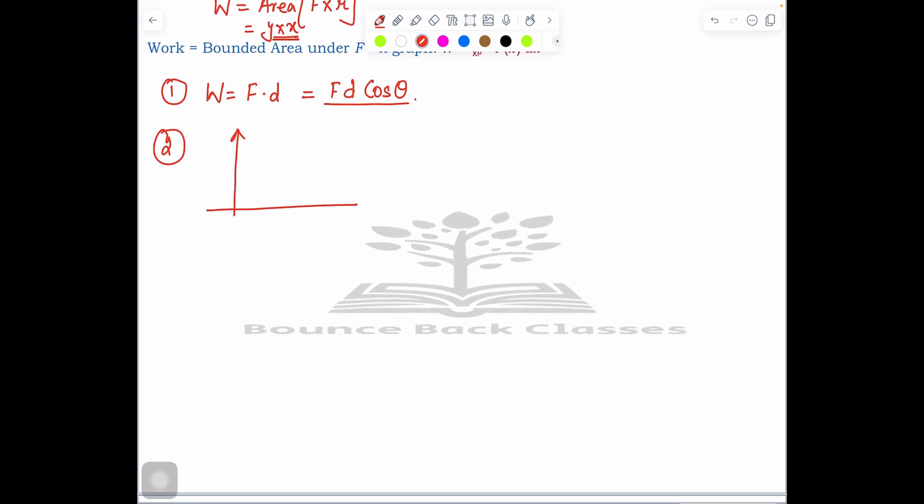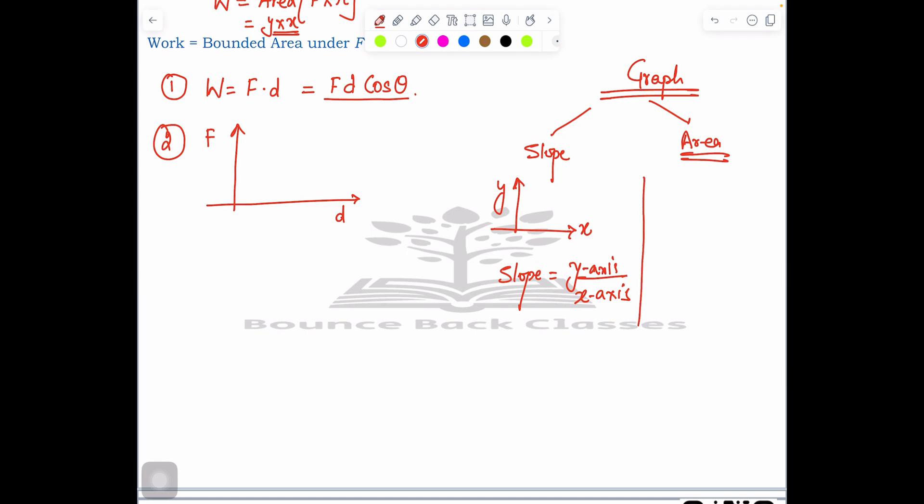In terms of graph, you have two things: one is called slope and one is called area. In terms of graph we have the y-axis and the x-axis. Slope equals y-axis divided by x-axis. I will give an example so that you can relate and solve other questions also.